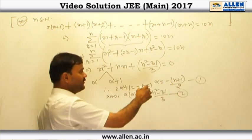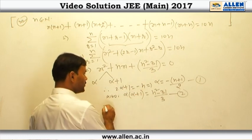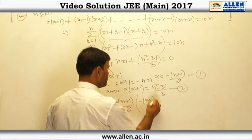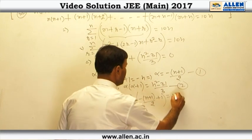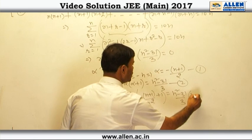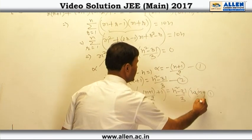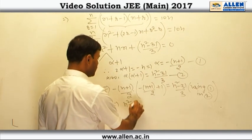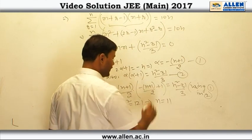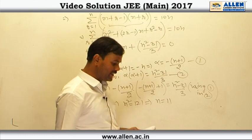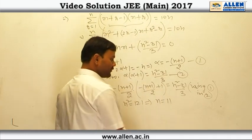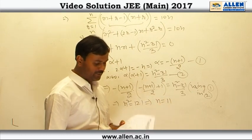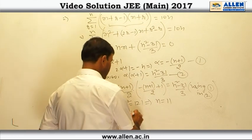From equation 1 we substitute the value of α into equation 2: −(N+1)/2 × (−(N+1)/2 + 1) = (N² − 31)/3. When we solve this equation in N, we finally get N² = 121, which gives N = 11 since N is a positive integer. We reject N = −11, and the value of N as a positive integer is 11. Therefore our answer is 1; answer 1 is correct.